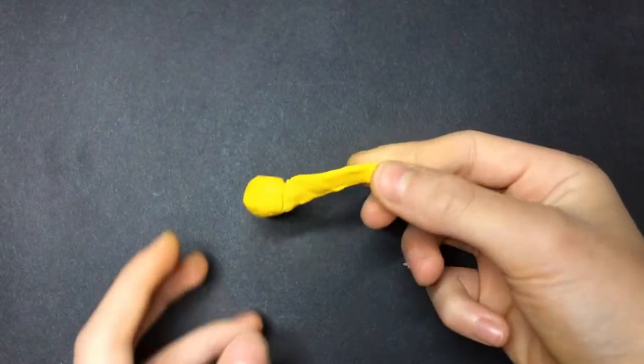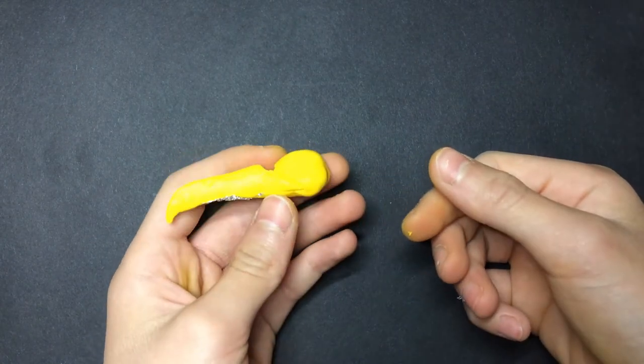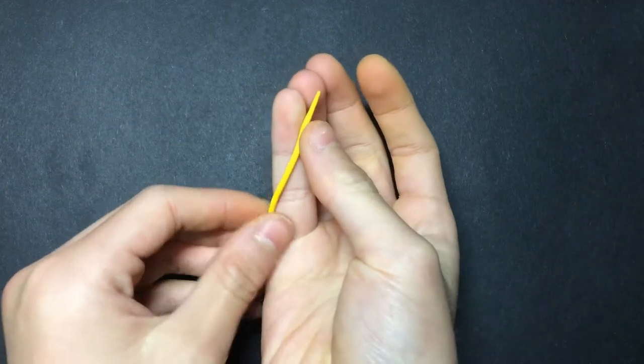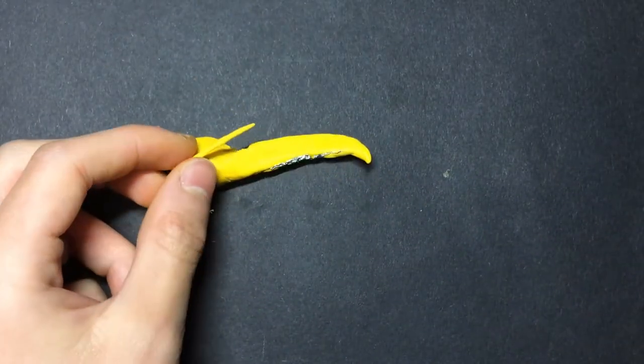Then, you can just cover the entire thing with a thin layer of Fimo, and to add some details, you can roll out a few... I can't call them wormy dealies. Shaky snakeys. Yeah, some thin shaky snakeys to add some detail.